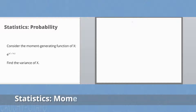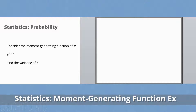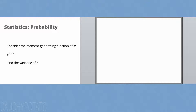Hey internet, for this video I'm going to solve a probability statistics problem. Consider the moment generating function of x: e to the power of 2e to the power of t plus 7t minus 2. Find the variance of x.